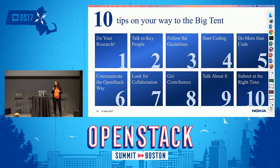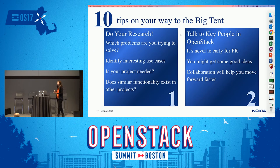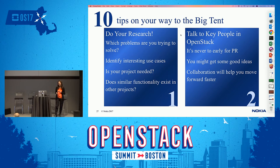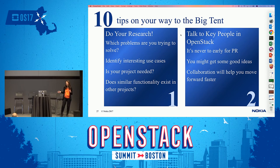Now let me share a few tips from our experience — things we did right — and what you can do if you want your project to enter the big tent. Start with research: define your goal and use cases, what you are trying to solve, and verify it is really needed. Check other projects in OpenStack and make sure no one else is currently doing the same thing. Then go talk to key people in OpenStack — identify people doing relevant things, get their feedback and advice, and let the community know you are going to do something.